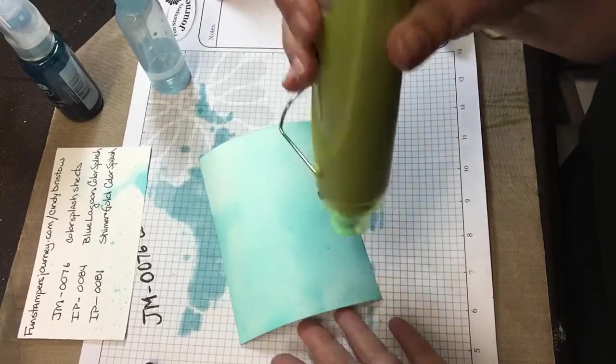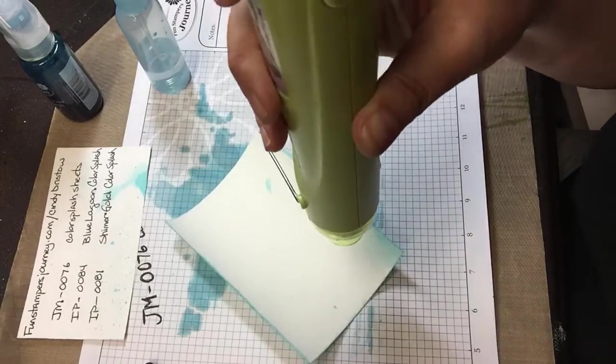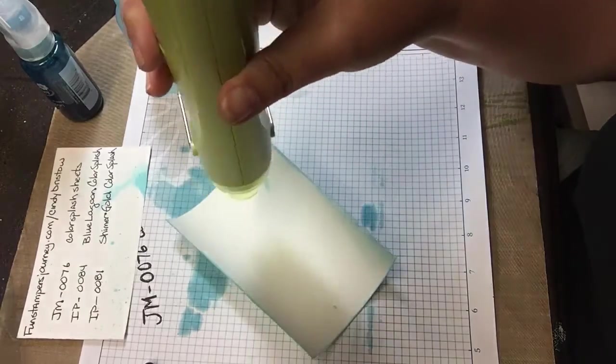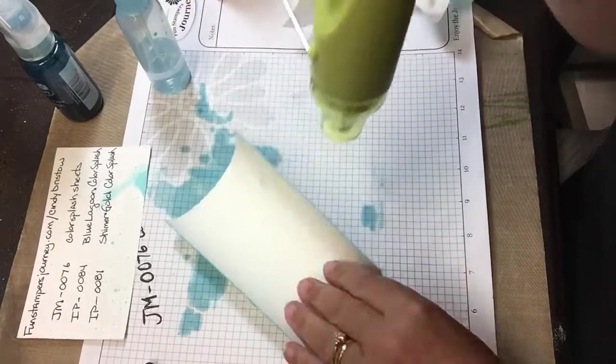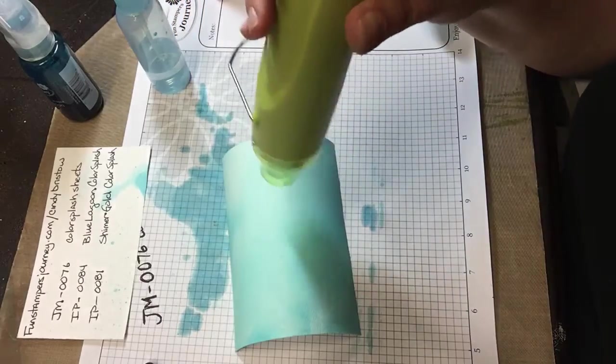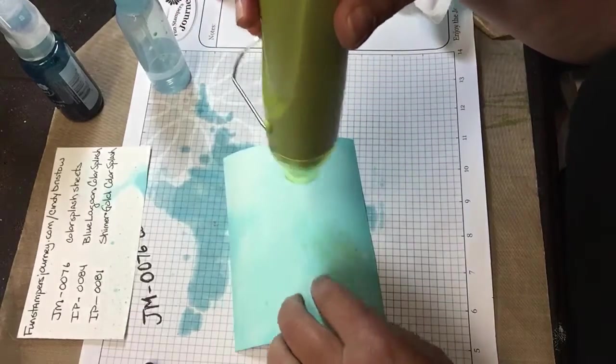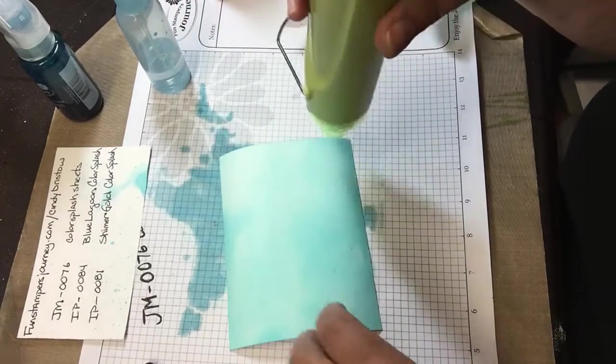You see how it's curling up? If you flip your paper over and dry it from the other side again, it flattens out. And the reason it does that is because the paper fibers in it, so as it dries it's going to flatten out.